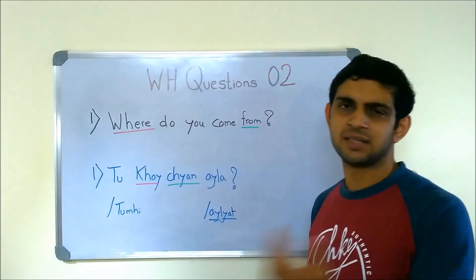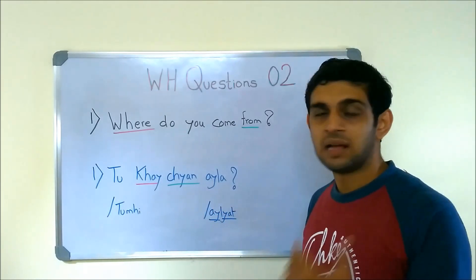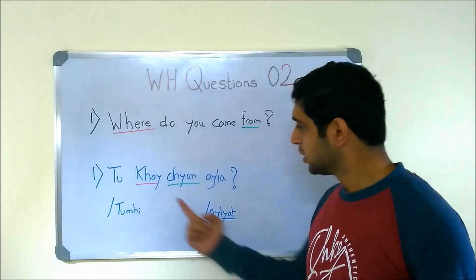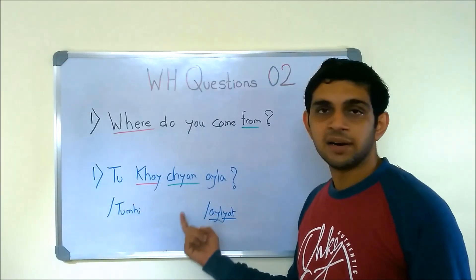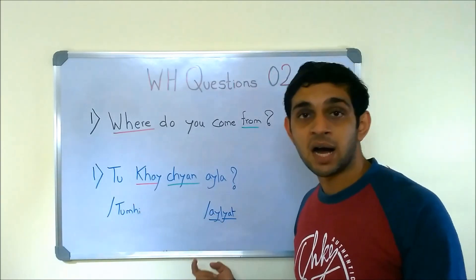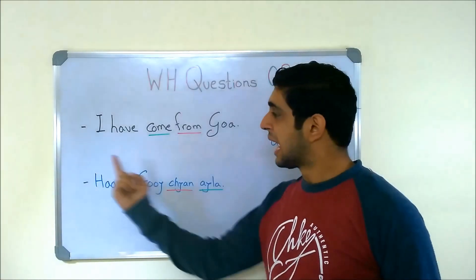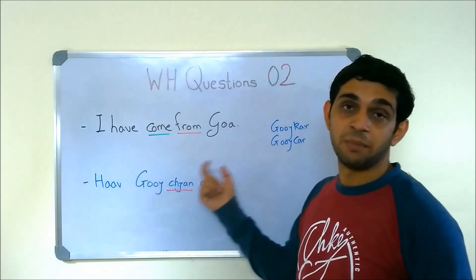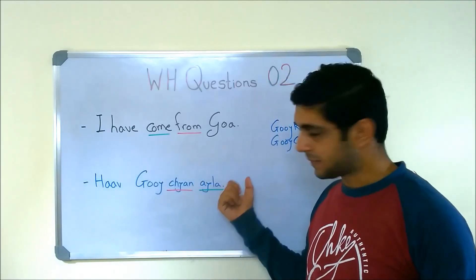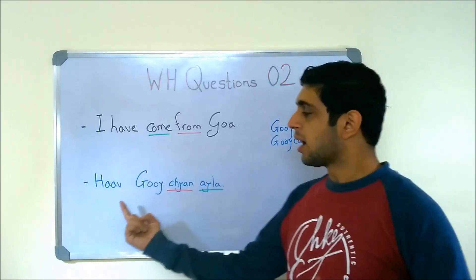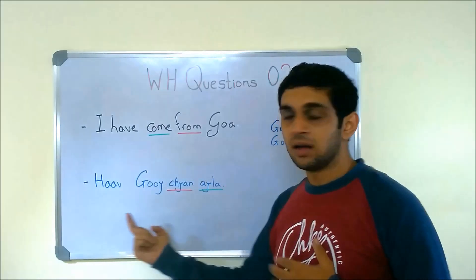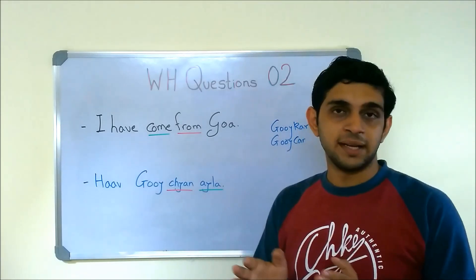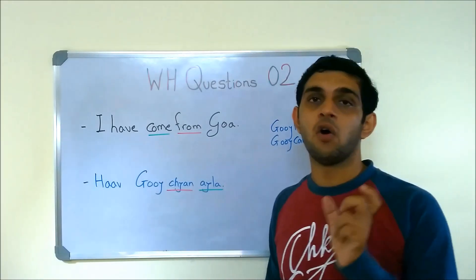You don't say AILA continuously — you say AILA with a pause: TUMI KHONI CHAAN AILA. So, the answer 'I have come from GOA' — GOA in Konkani is GOIN.